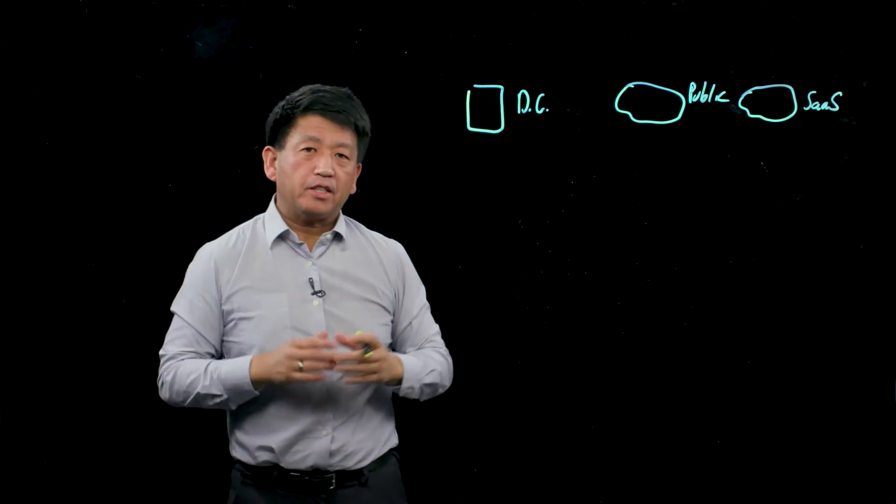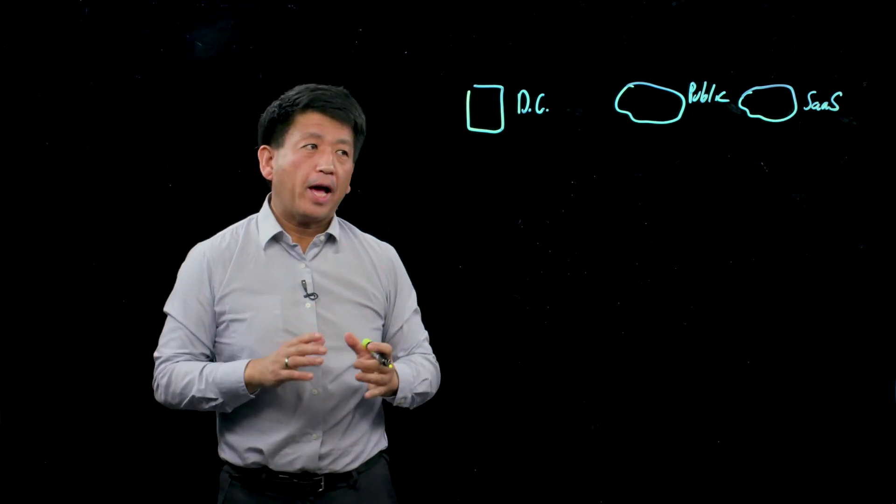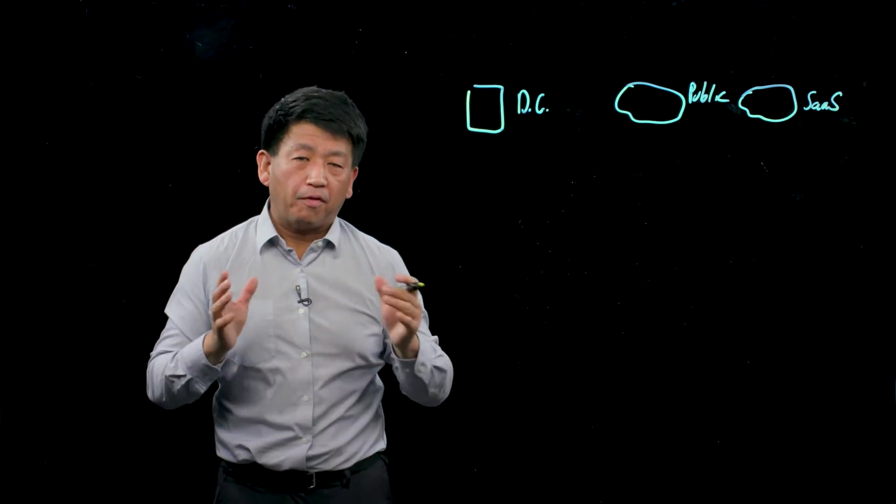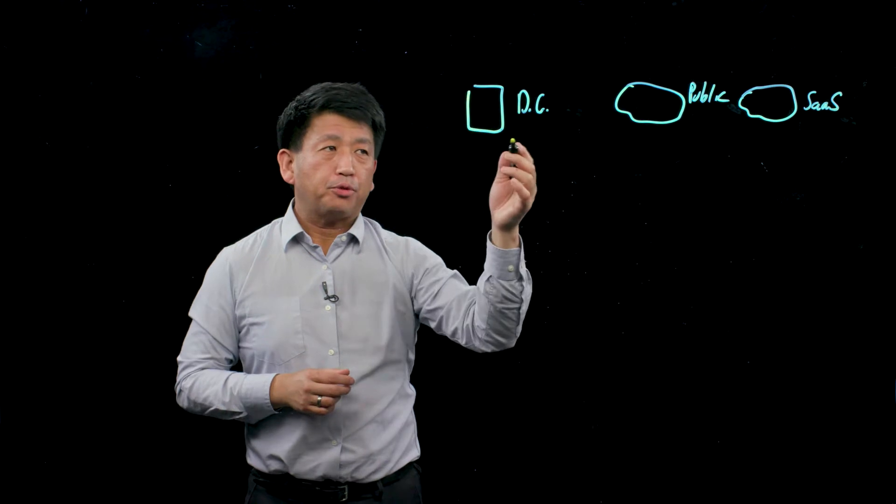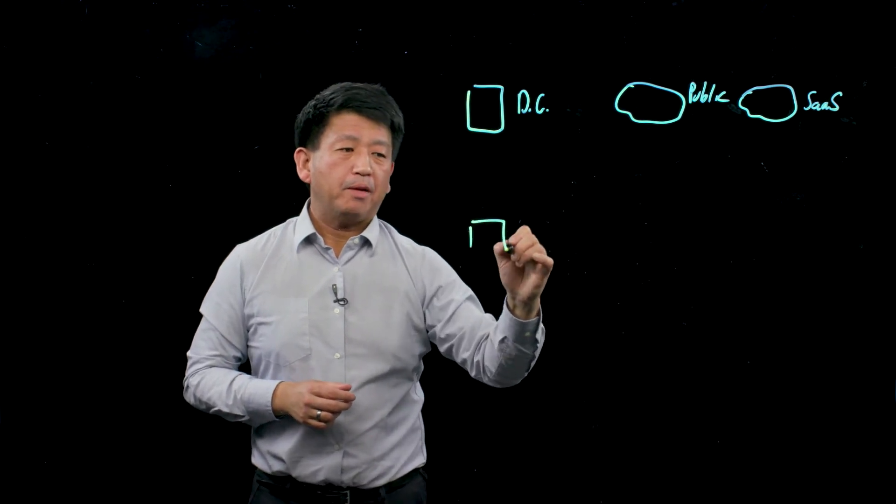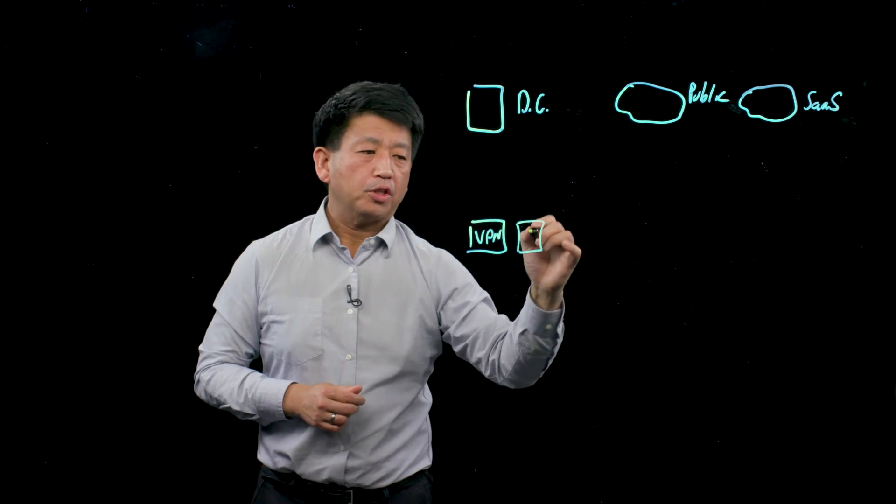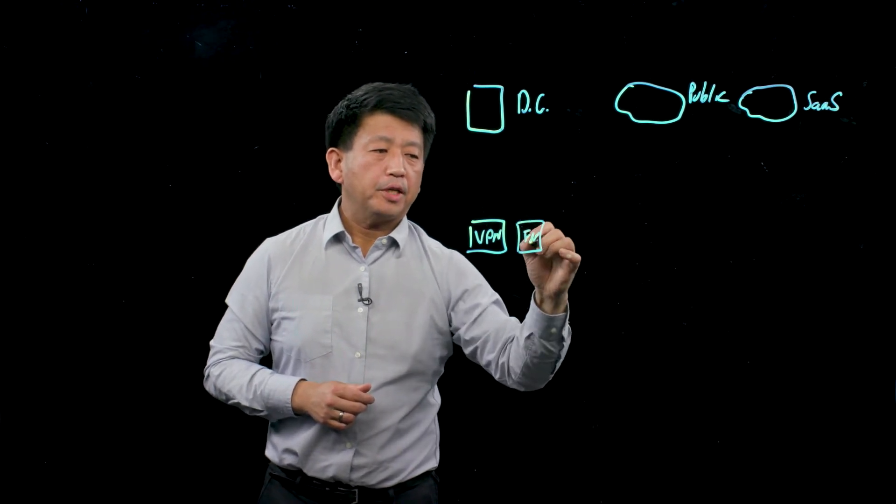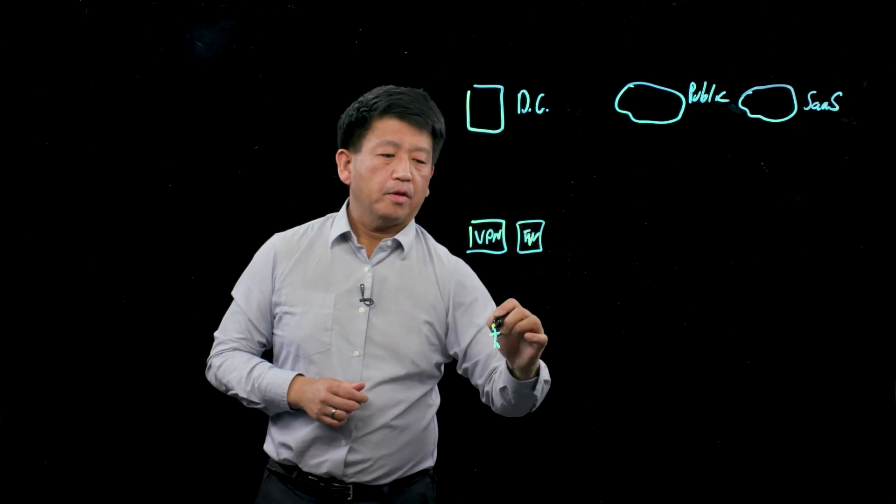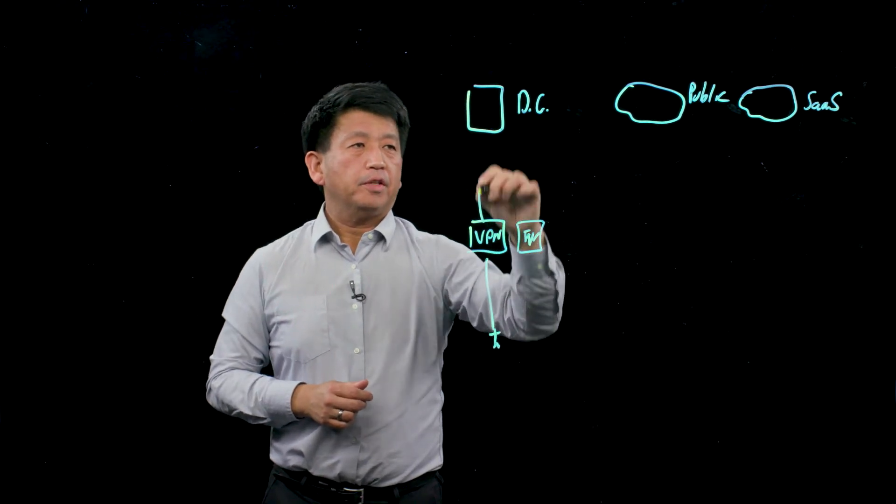When you think about the different technologies involved to control access, there are many different ways to provide access controls. In traditional data centers, people have been using things such as VPNs or firewalls to gate who can access resources in the data center.